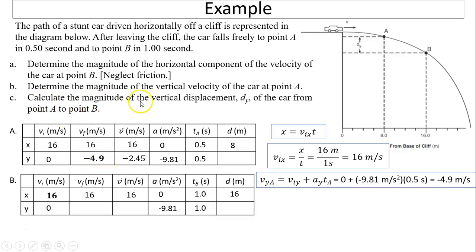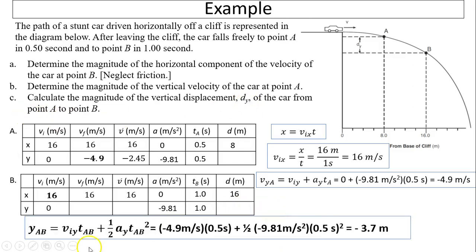To find the magnitude of vertical displacement Dy from A to B: using Dy equals Viy(A) times delta-t plus one-half Ay times delta-t squared. Viy at A is negative 4.9 meters per second, delta-t from A to B is 0.5 seconds, and acceleration is negative 9.81. This gives negative 3.7 meters, so the magnitude of vertical displacement is 3.7 meters downward.